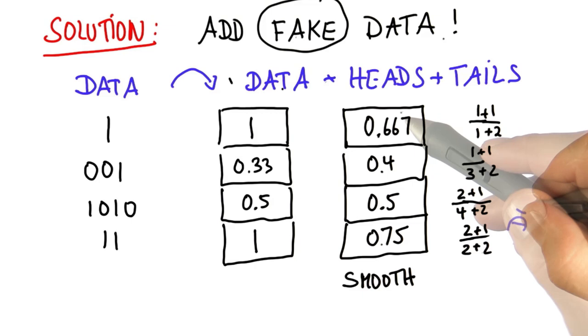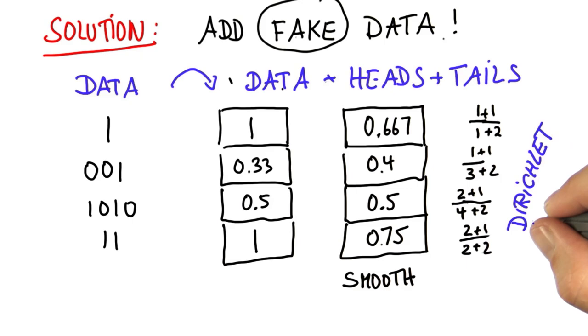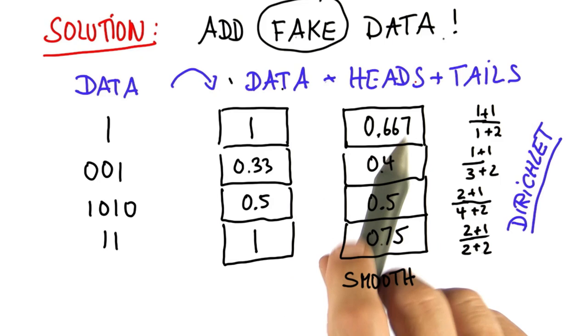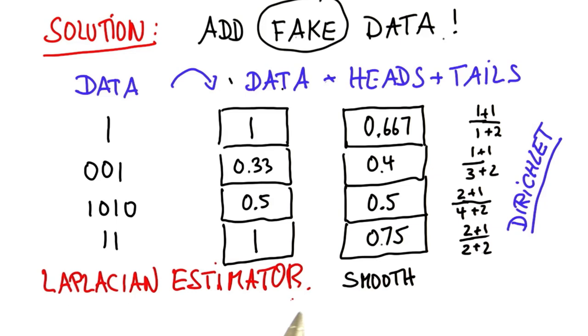There's an entire literature that talks about these priors. They have a very cryptic name. They're called Dirichlet priors. But more importantly, the method of adding fake data is called a Laplacian estimator. When there's plenty data, the Laplacian estimator gives about the same results as the maximum likelihood estimator.